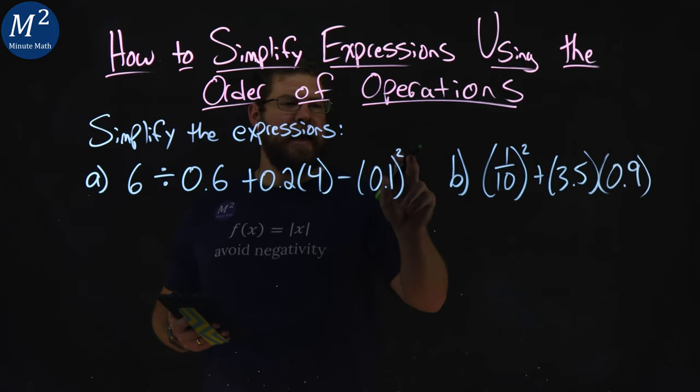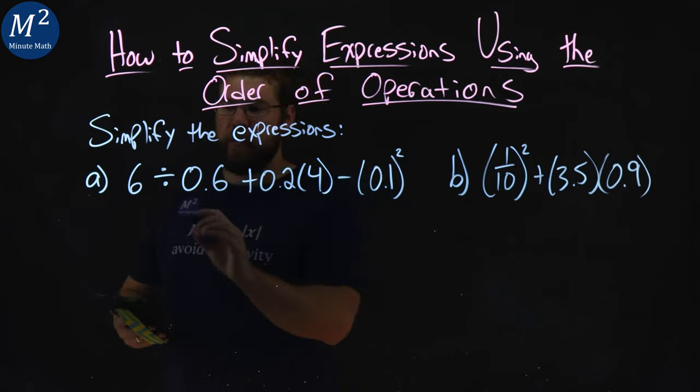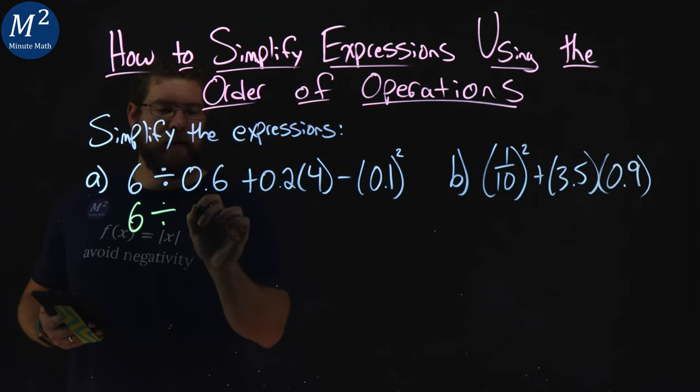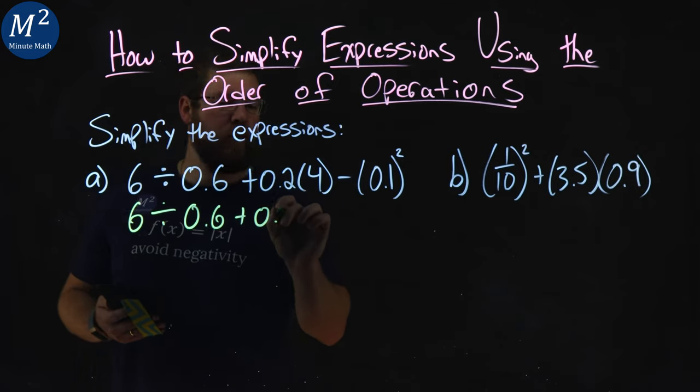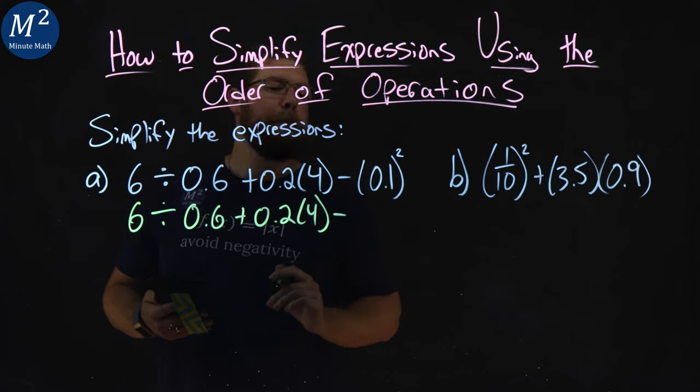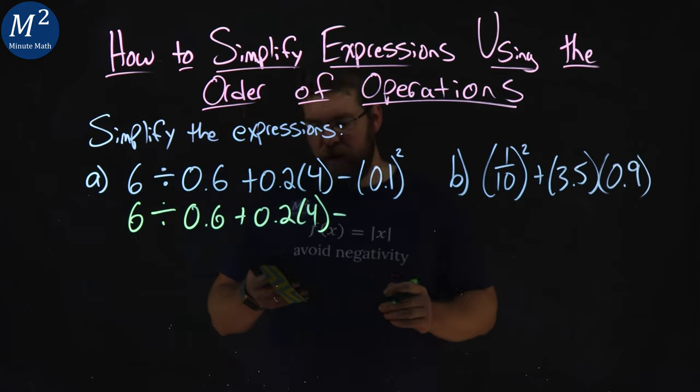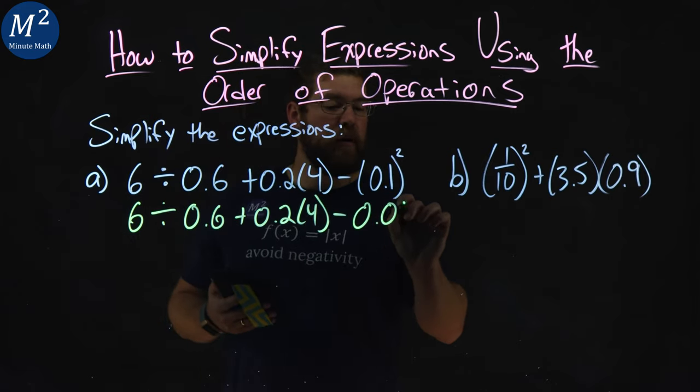Well, first thing, I have the exponent here, something squared. So let's rewrite this, 6 divided by 0.6 plus 0.2 times 4 minus 0.1 squared is 0.01.